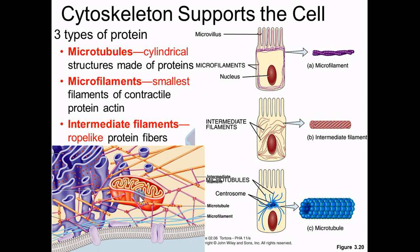When you look at the organelles inside the cell, like the mitochondria, you can see microtubules coming off of it, little tiny strings which are the microfilaments, and then pink fibers which are the intermediate filaments. They look like they're randomly scattered, but they're actually well organized to hold things like the endoplasmic reticulum and the mitochondria in place.